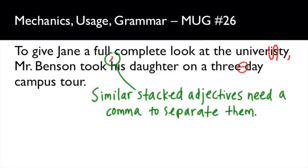All right, first up this time, I want to talk about this right here. "Full" and "complete" are both adjectives for the word "look," and when we have similar adjectives describing the same noun, you're going to separate them with a comma. "Full" and "complete" mean kind of the same thing, so they're of equal weight in meaning and tone — they get that comma treatment. If you were using two adjectives completely different in weight, meaning, or tone, then you would not separate them with a comma.